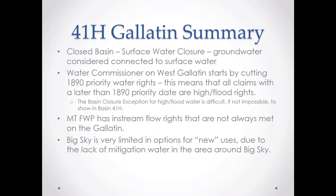Quick summary on the Gallatin side: it's a closed basin. The water commissioner on the West Gallatin starts cutting water at an 1890 priority date, so in reality anything after 1890 — all water rights between 1890 and 1973 — are essentially high flood-flow rates, meaning that water is pretty much all accounted for, even though there is an exception to base-flow closure for high spring flows. Fish, Wildlife, and Parks in-stream flow rates are not always met; those in-stream flow rates are becoming indicators of where flows are in many rivers, and we're seeing it on the Yellowstone and the Shields as well.